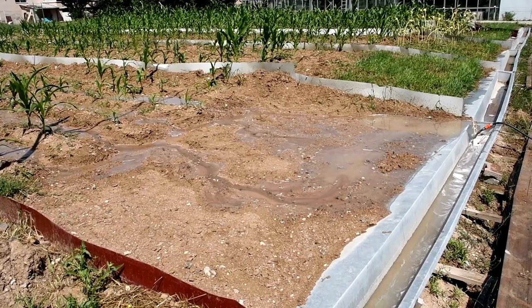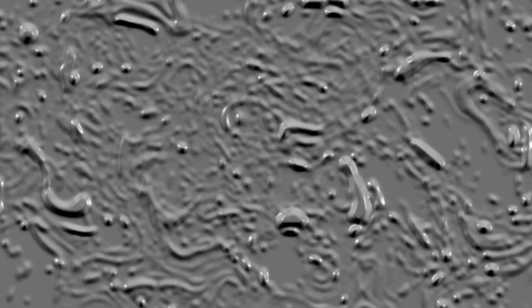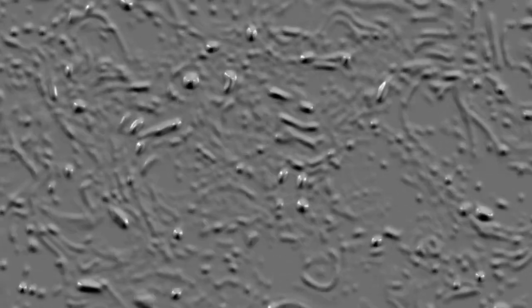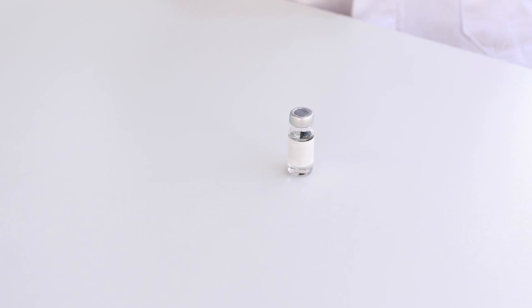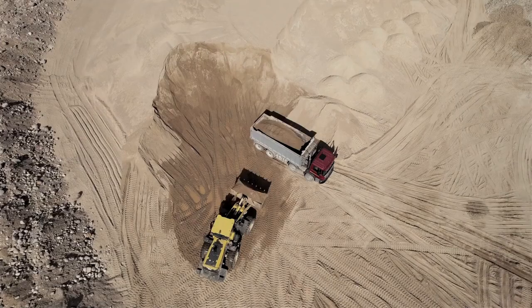NASA confirmed this deviation from protocol, stating that while the drill still met basic safety standards, it hadn't undergone the full decontamination regimen, and it was this very drill bit that was later used to extract the samples where these unusual hydrocarbons were discovered.